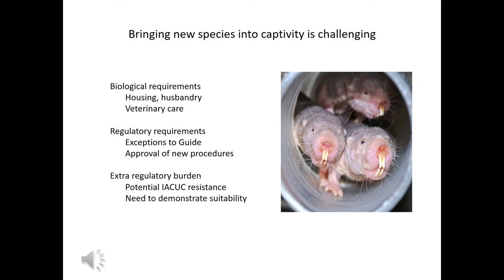It's almost a given that housing exotics will require approval of new procedures — meaning procedures that are not familiar to your IACUC. All of this creates an extra regulatory burden for biologists attempting to establish captive populations of exotic species. This burden includes potential resistance from your IACUC if they are unwilling to explore new options for housing or husbandry, and often requires that researchers demonstrate the efficacy of specific housing or husbandry practices.